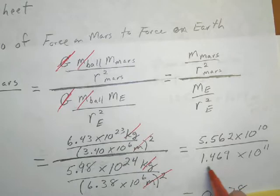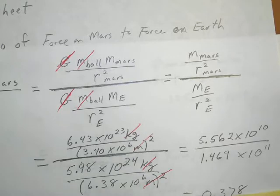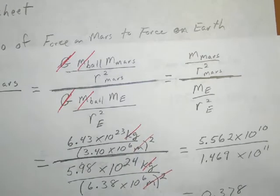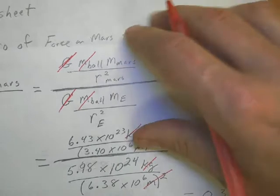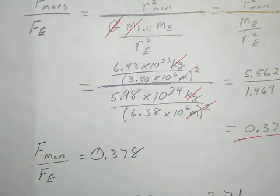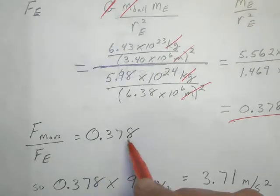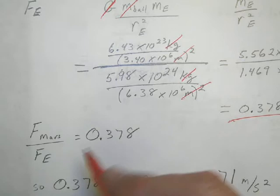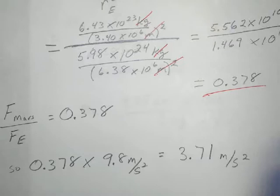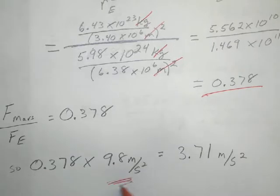So the force is 0.378 that of the force of gravity on Earth. The acceleration of gravity on Earth is 9.8 meters per second squared, so we take Mars's value compared to Earth, that 0.378 times the 9.8, and we end up with 3.71 meters per second squared. So the ball that would accelerate this fast on Earth would accelerate slower on Mars.